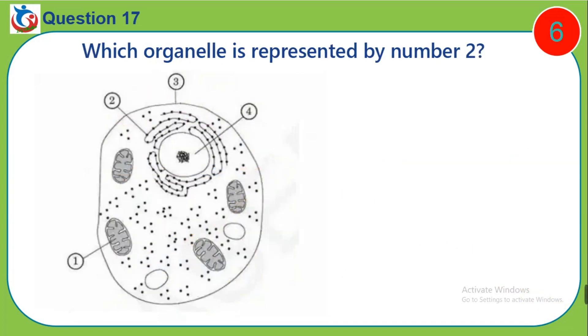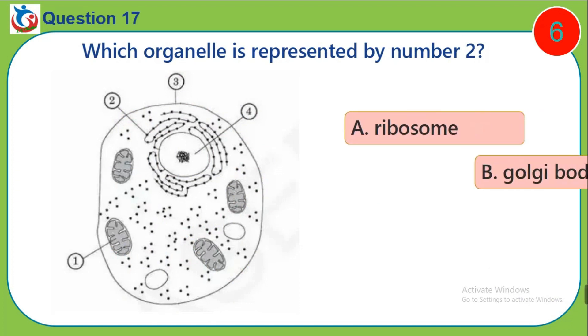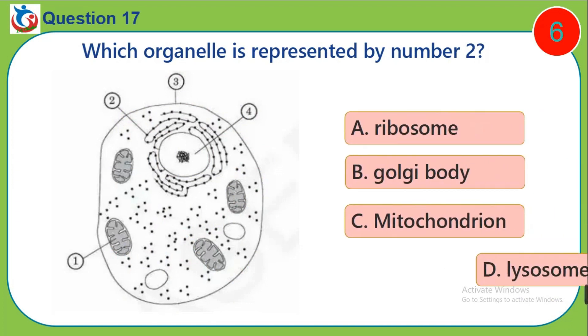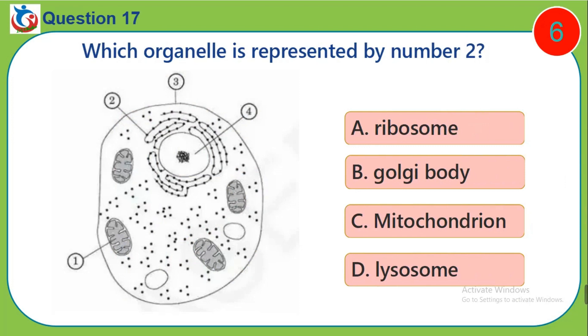Question 17. Which organelle is represented by number 2? A. Ribosome. B. Golgi body. C. Mitochondria. D. Lysosome.